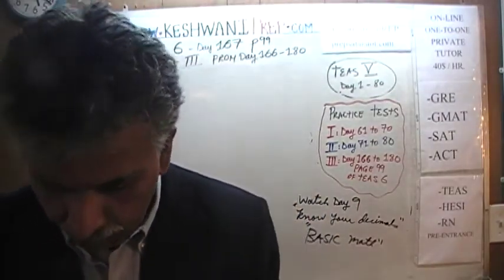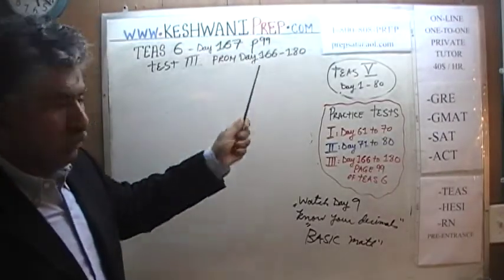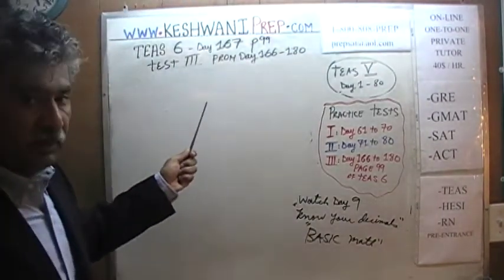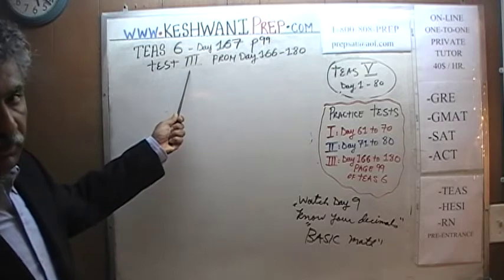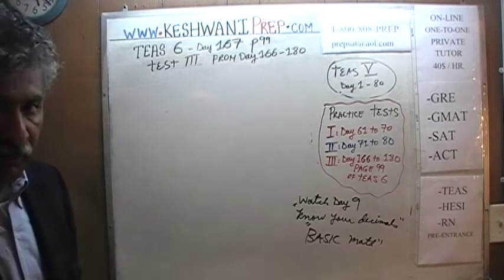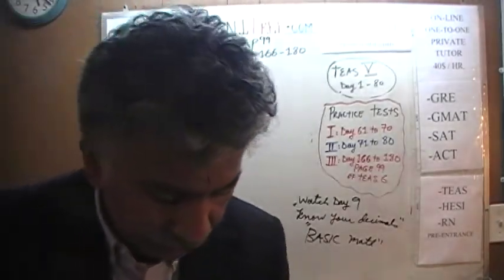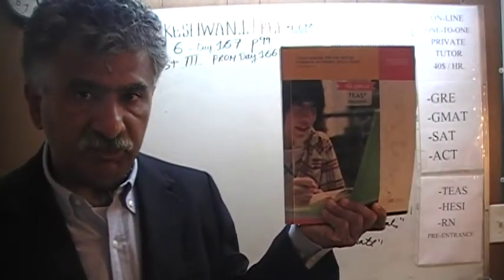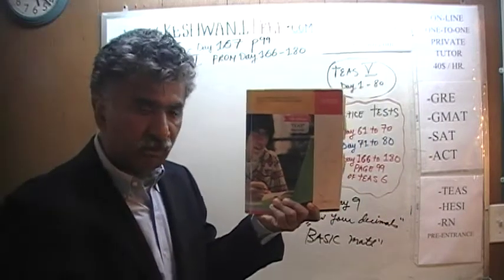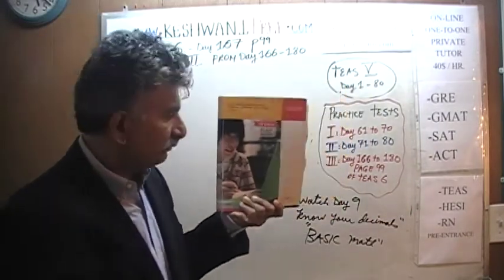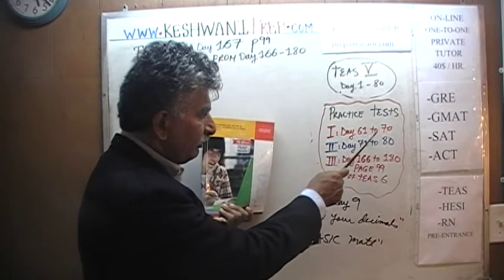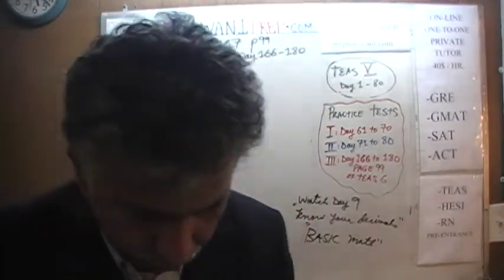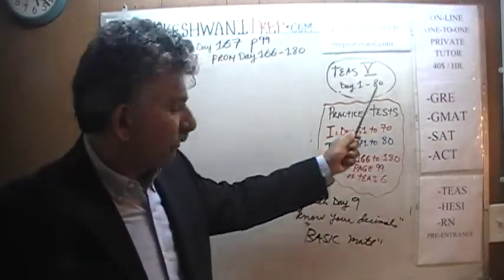Today is our lesson number 167, and we are on page number 99. We are going through the quiz which we are referring to as test number 3. If you are interested in practicing the two tests before that — those appeared in the 5th edition — there are two exams we went through. Test 1 solutions are on day 61 through 70, exam 2 on day 71 through 80. Solutions to all problems in the 5th edition are from day 1 through 80.